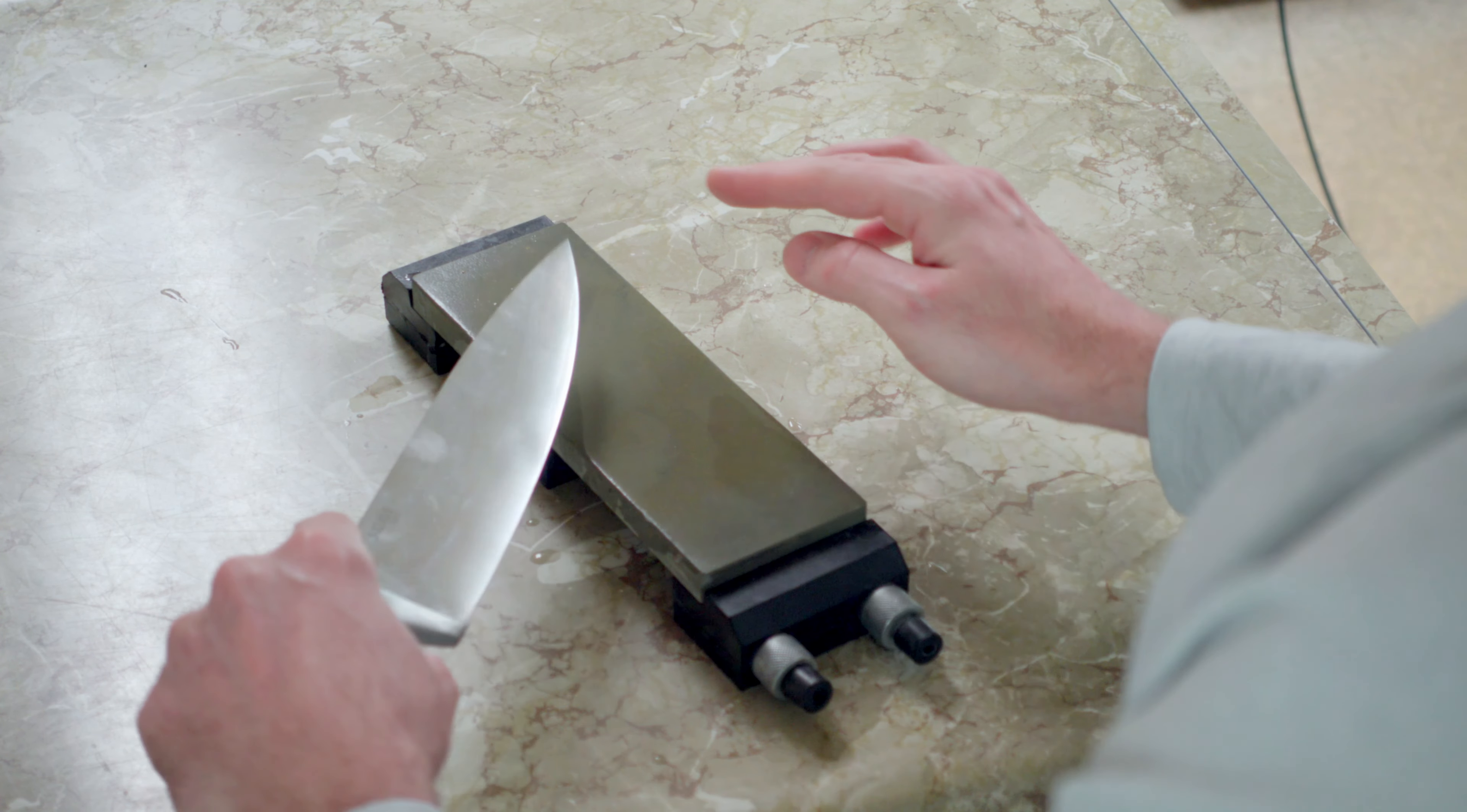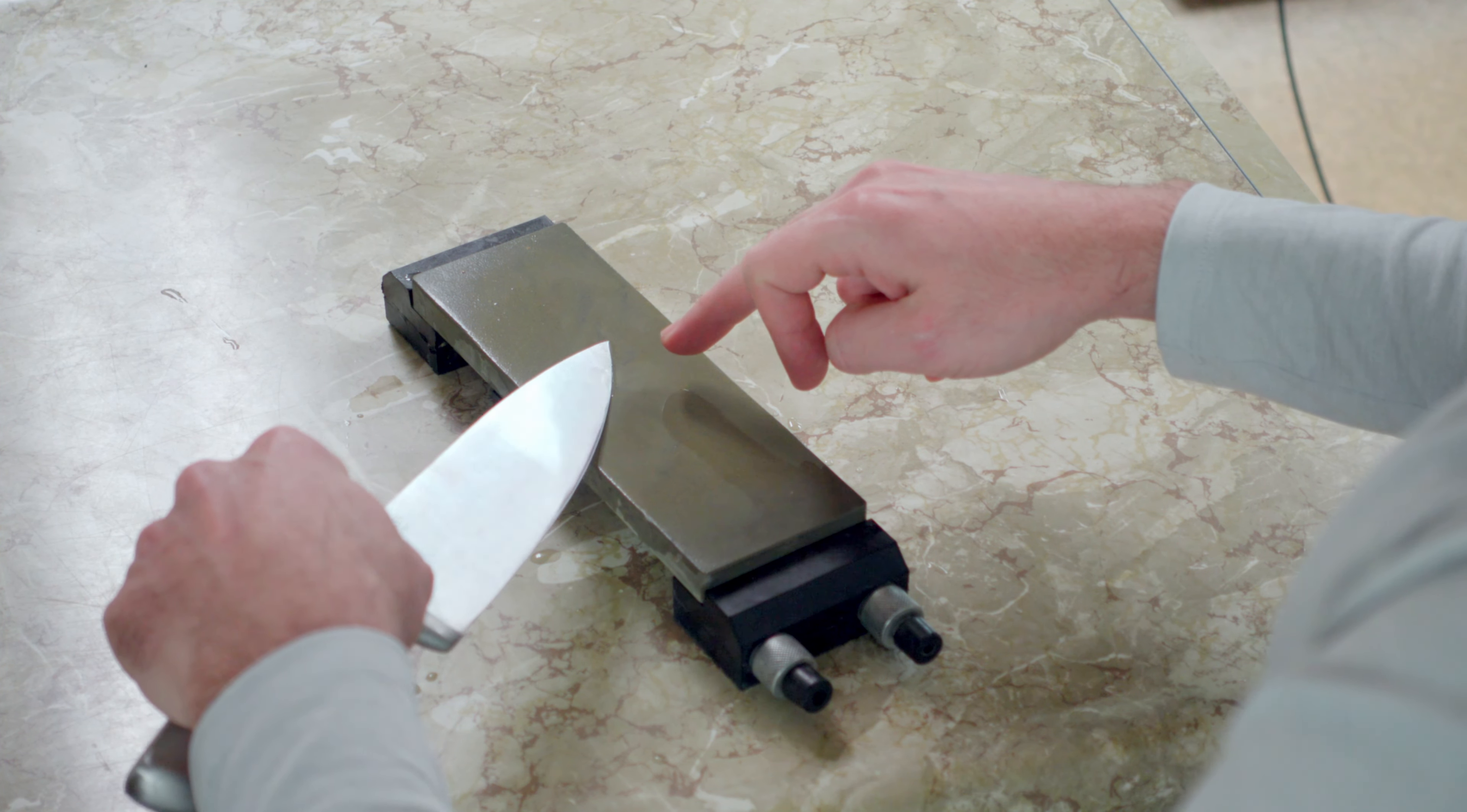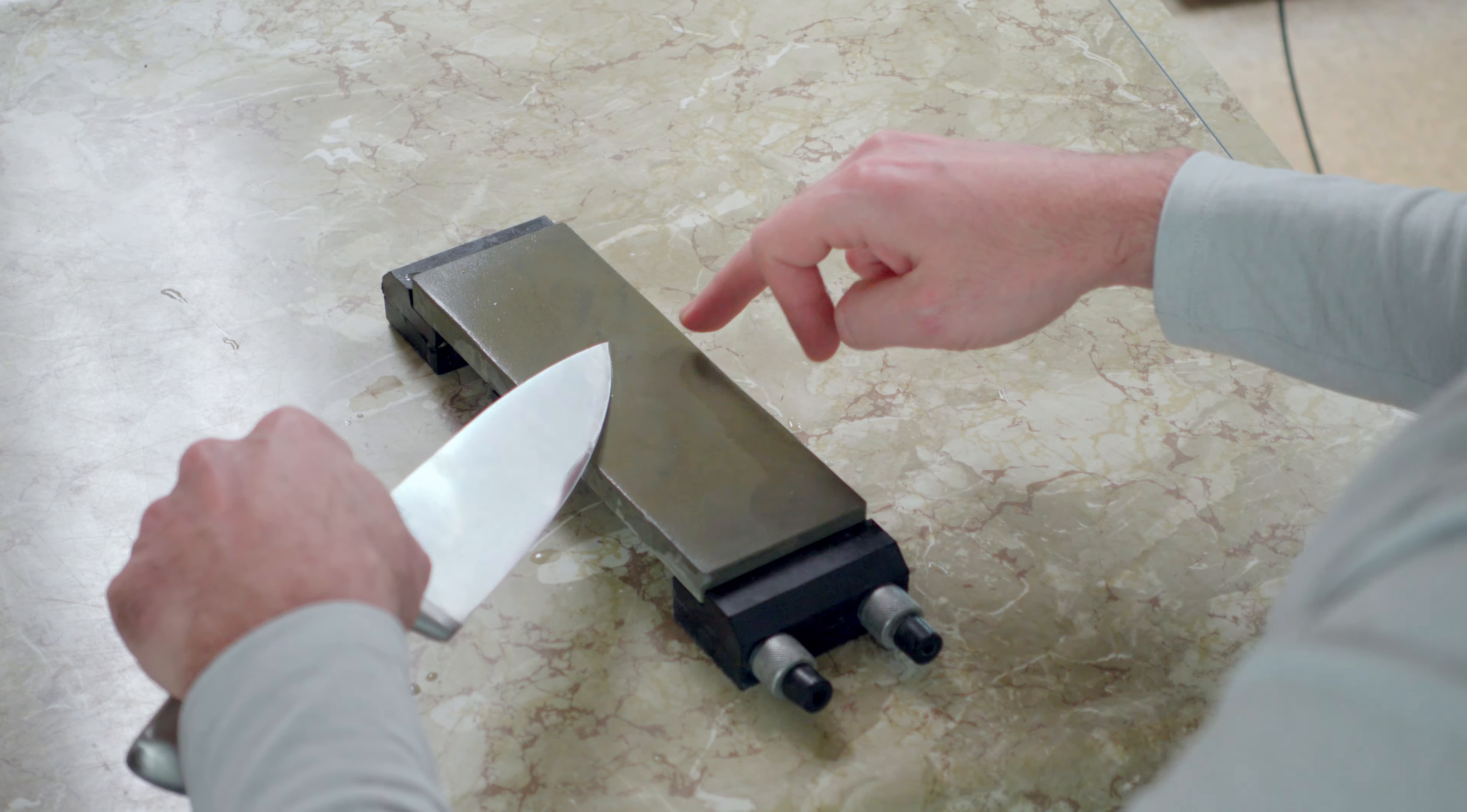That's the technique. Start with the absolute tip. You're going to have the knife elevated, as you can see. You're just going to lower it slightly every time you get to another part of the belly until you've hit the whole belly perfectly.